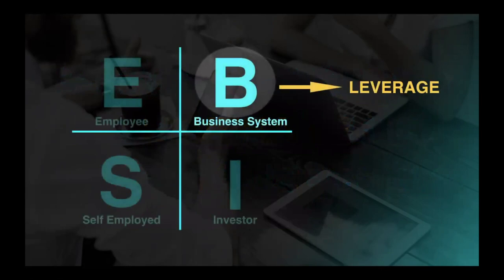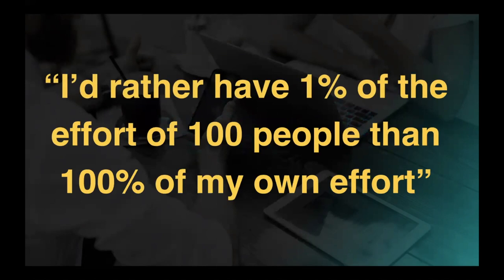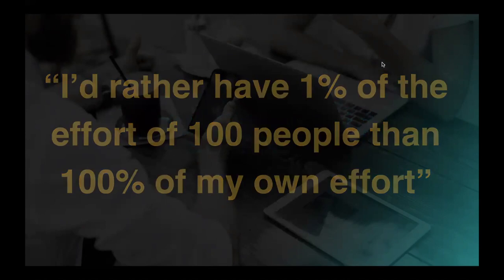This is built out of the B quadrant, the business system owner quadrant. I want to show you a quote from J. Paul Getty, who at one time was the wealthiest man in the world. This quote really helps you understand how you need to start thinking and what you need to do to generate significant residual income with leverage. Listen carefully. He said, I'd rather have 1% of the effort of 100 people than 100% of my own effort. What's he talking about?